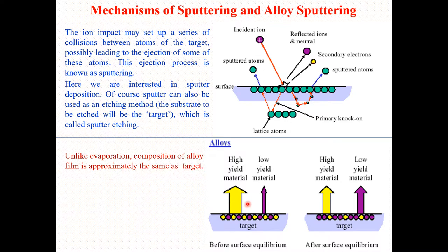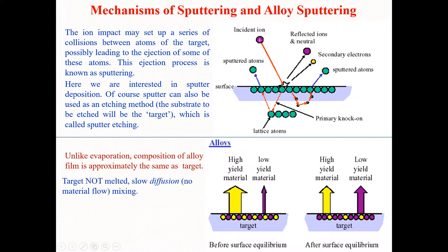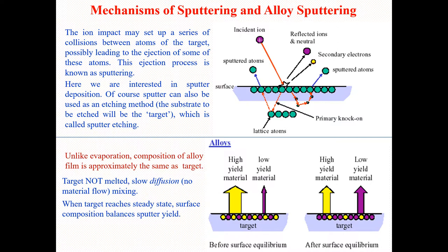Something like compositional variation was happening in evaporation, but unlike that, it does not happen in sputtering techniques because in sputtering we have surface equilibrium. That's why we have almost the same compositions in the product material as in the source material. The target is not melted, so slow diffusion means no material flow or mixing. When the target reaches steady state, surface composition balances the sputtering yields.